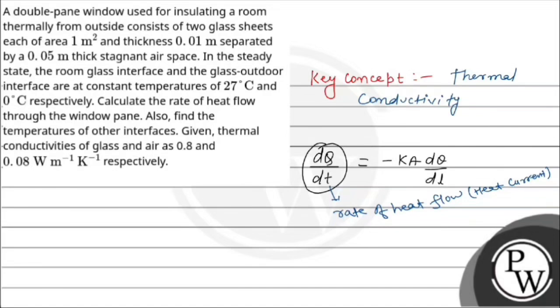So our final answer: the rate of heat flow dQ/dt equals 41.538 joules per second. θ₁, the temperature at surface 1, is 26.48 degrees, and θ₂, the other surface temperature, is 0.52 degrees. Hope you understood it well, all the best.